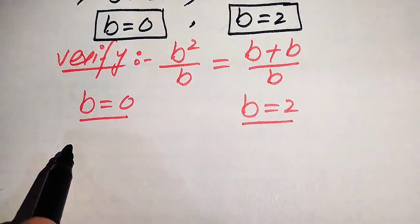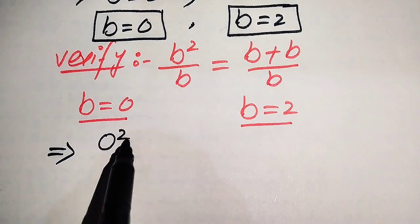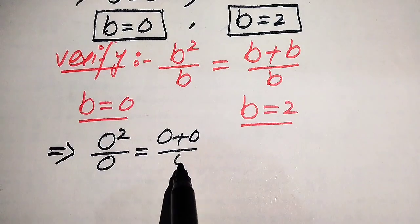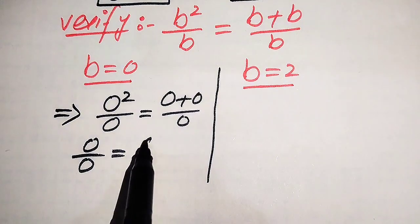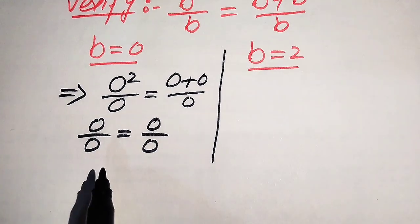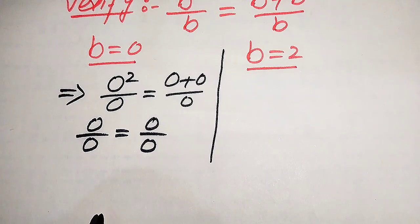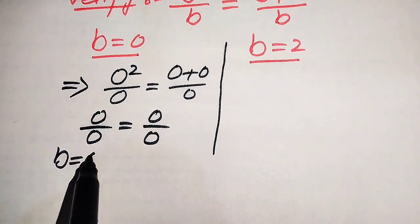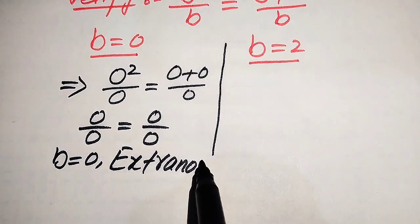We substitute b equals 0 on both sides. The left hand side becomes 0 squared divided by 0, and the right hand side becomes 0 plus 0 divided by 0. So we get 0 over 0 equals 0 over 0. Since 0 over 0 is an undefined form, both sides are undefined.